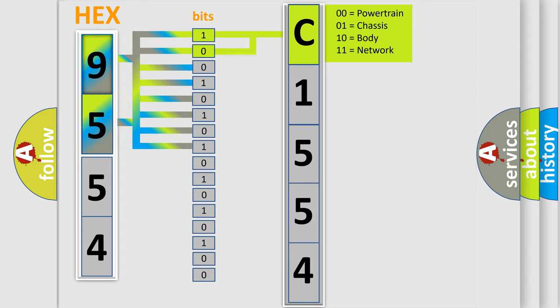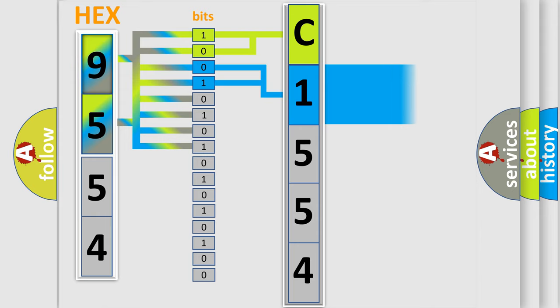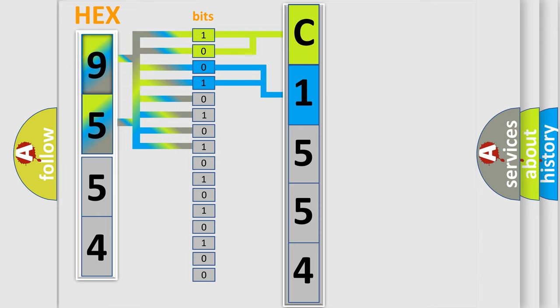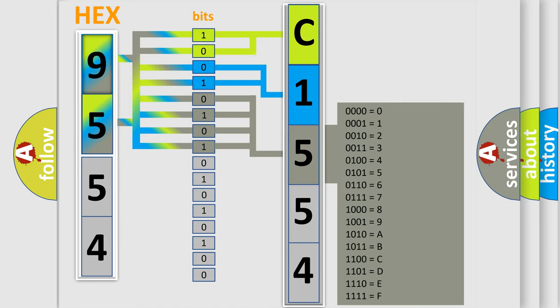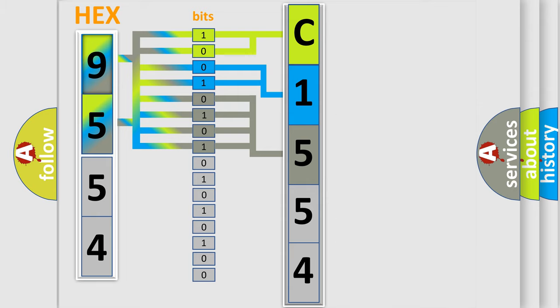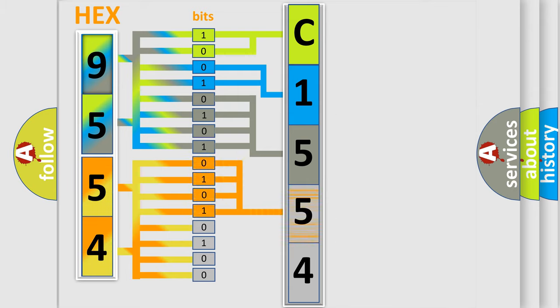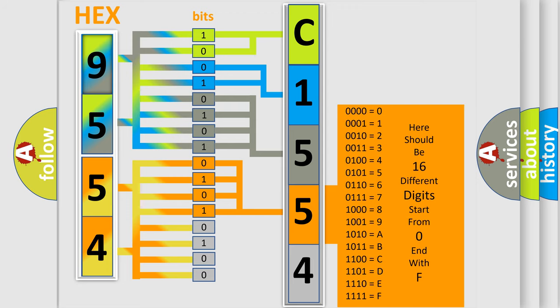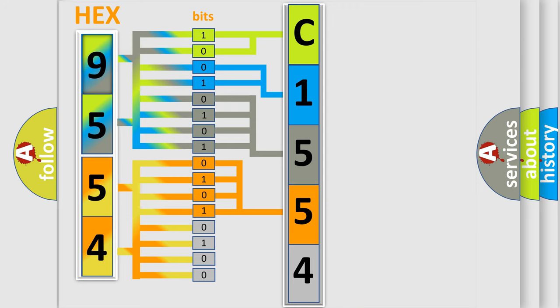By combining the first two bits, the basic character of the error code is expressed. The next two bits determine the second character. The last bit styles of the first byte define the third character of the code. The second byte is composed of a combination of eight bits: the first four bits determine the fourth character of the code, and the combination of the last four bits defines the fifth character.